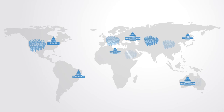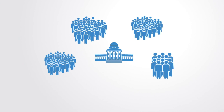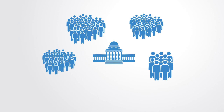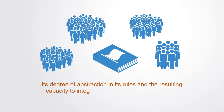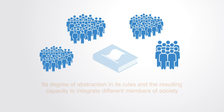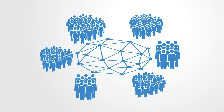Today, many political systems call themselves democracies and have all the formal institutions of such an organization, but many remain deeply concentrated around specific subclasses based on ethnicity, wealth, or family. The measurement of a political system is in the degree of abstraction in its rules and the resulting capacity to integrate different members of society.